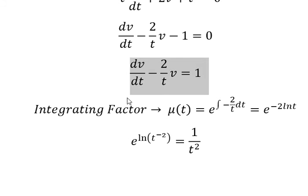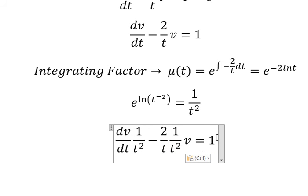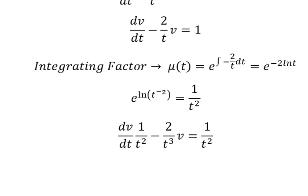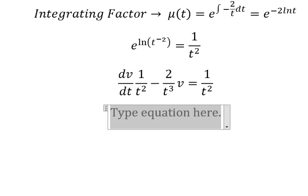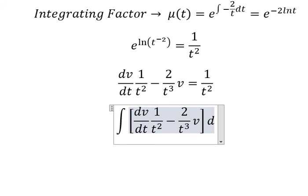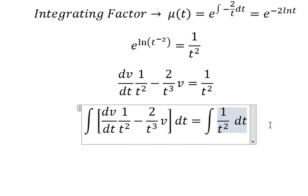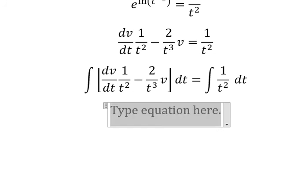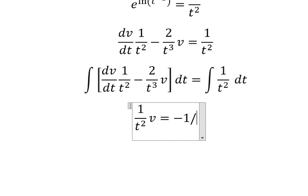So we multiply both sides by this integrating factor. We get 2 over t to the power of 3 on one side. Next, we integrate both sides. The integration on the left gives 1 over t squared times v, and the integration on the right gives negative 1 over t plus c.